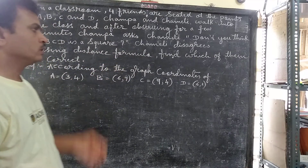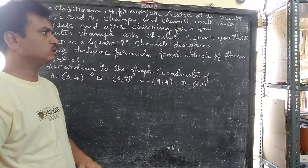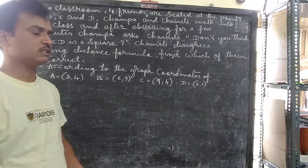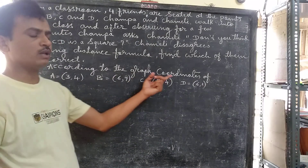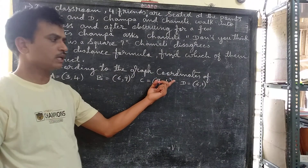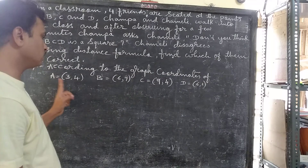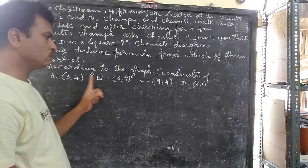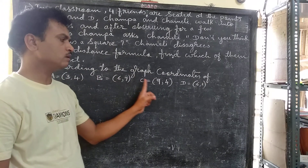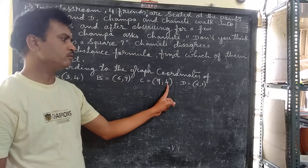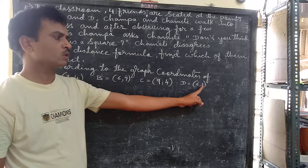Now, here we need to find whose answer is correct — Champa's or Chameli's. According to the graph given in the textbook, the coordinates are: point A(3, 4), point B(6, 7), point C(9, 4), and point D(6, 1).